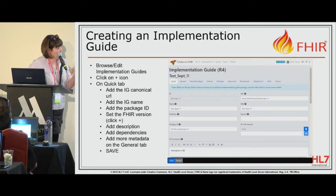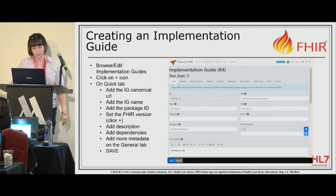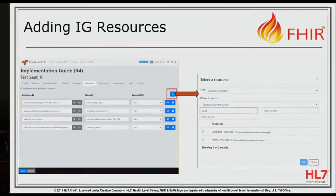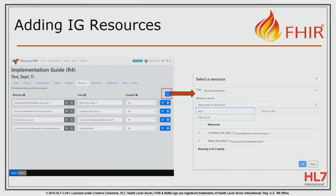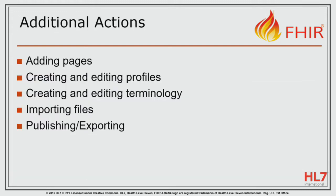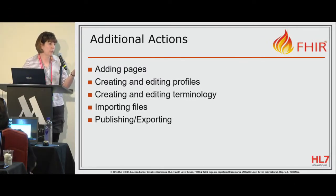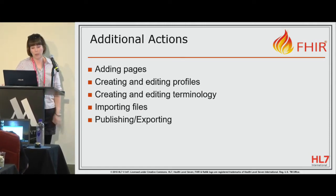You can also add dependencies — say, to US core — and save your implementation guide. You can add IG resources in the resources tab, click on that button and then select any of the resources. So you can add value sets or code systems, any of your examples, and obviously your structure definitions as well, which are your profiles. Additional actions are adding pages, creating and editing profiles, creating and editing terminology. You can also import files — from an XML file or a JSON file — so if you already have a structure definition you can just drag and drop those in. You can also import value sets from VSAC, and you can publish and export. So you can sort of go back and forth between XML or JSON and the tool. If there's something the tool can't do right now, especially for examples, you can just do those manually and then pull them in later.